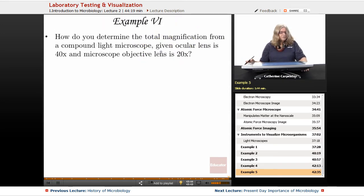So, our last question. How do you determine the total magnification? Now, this might be an exam question you would get. From a compound light microscope, given ocular lens is 40 times and the microscope objective lens is 20 times. So, the answer to that is you multiply 40 times 20 is 800.